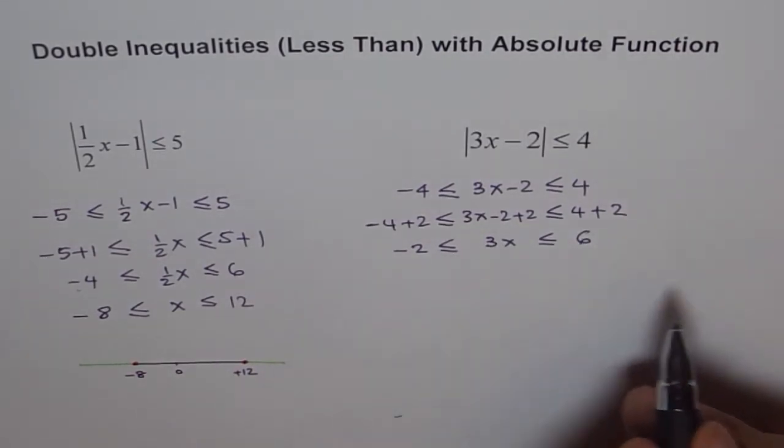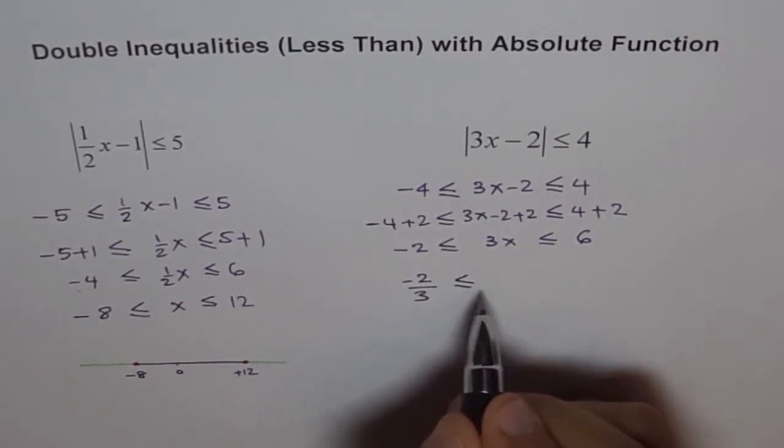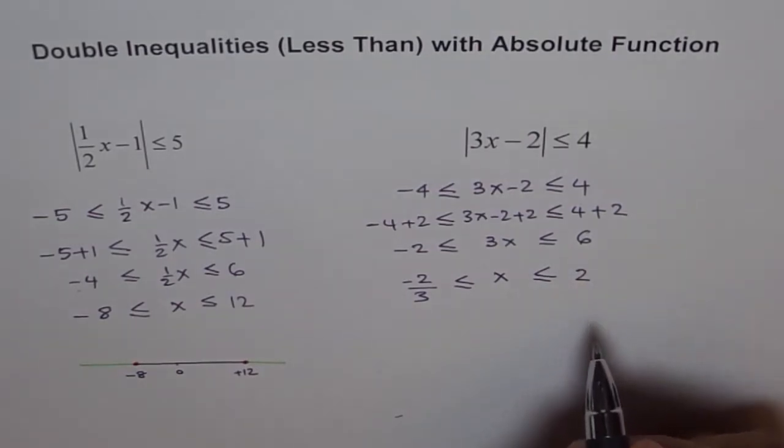Now, to get x, we'll just divide by 3. So, we get minus 2 over 3 is less than or equal to x is less than or equal to 6 divided by 3 is 2. Therefore, our solution is in inequality form like this or on a number line.